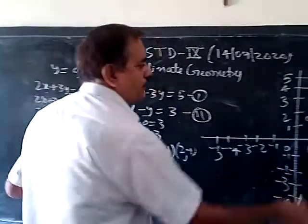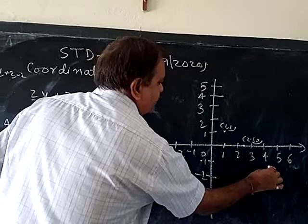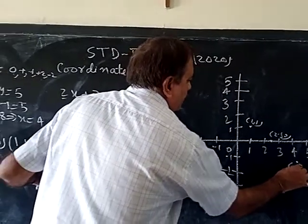Third, (4, -1). x is 4, y is minus 1. This is the point, (4, -1).